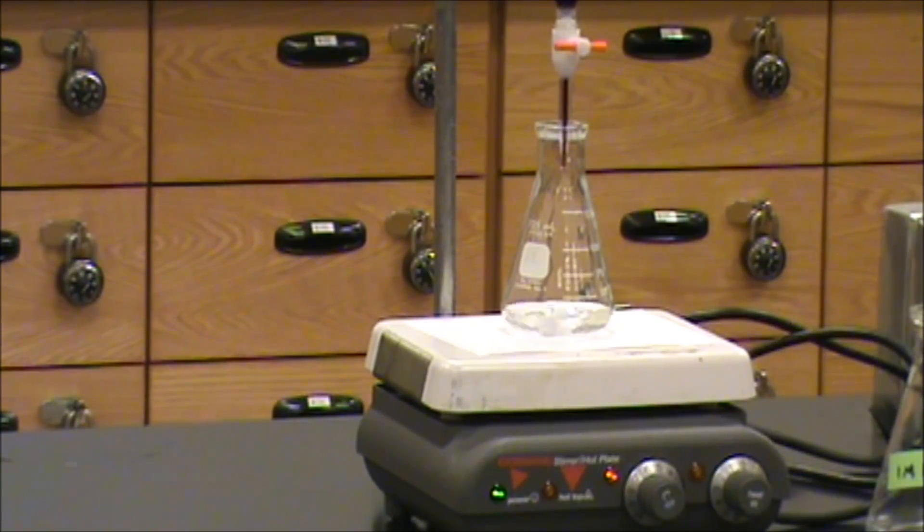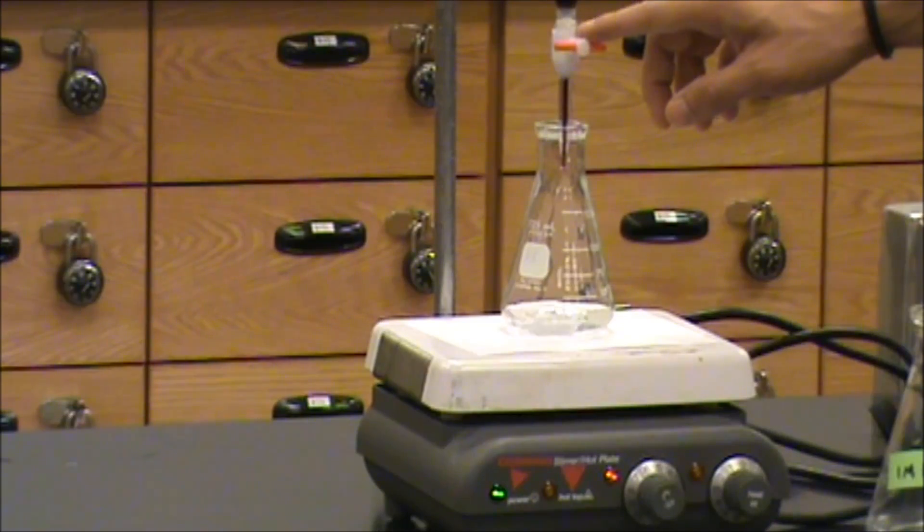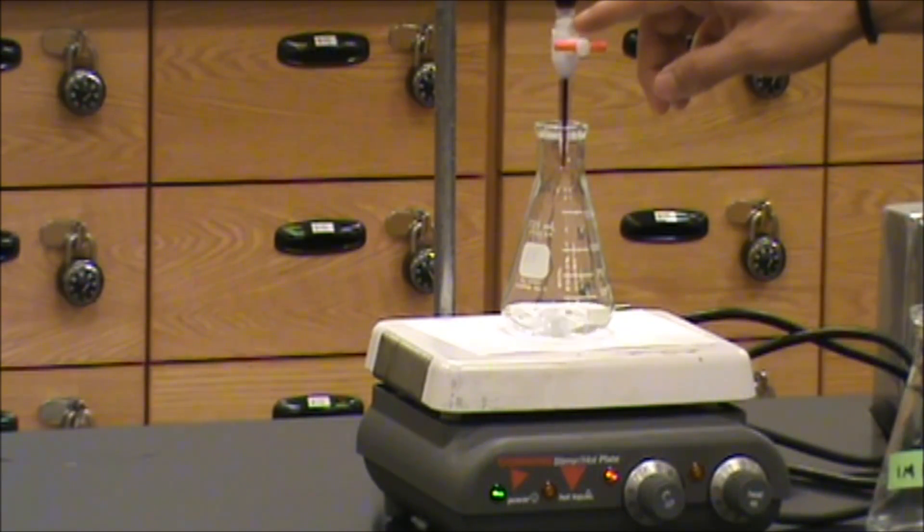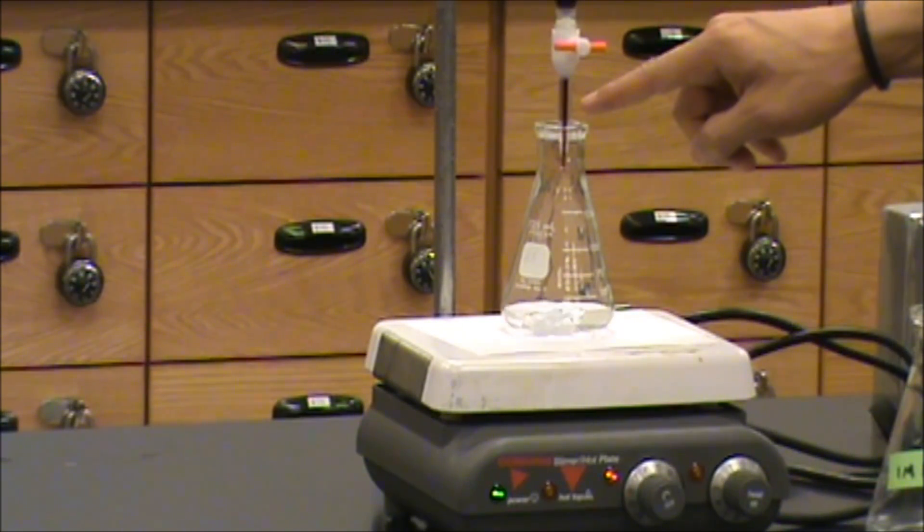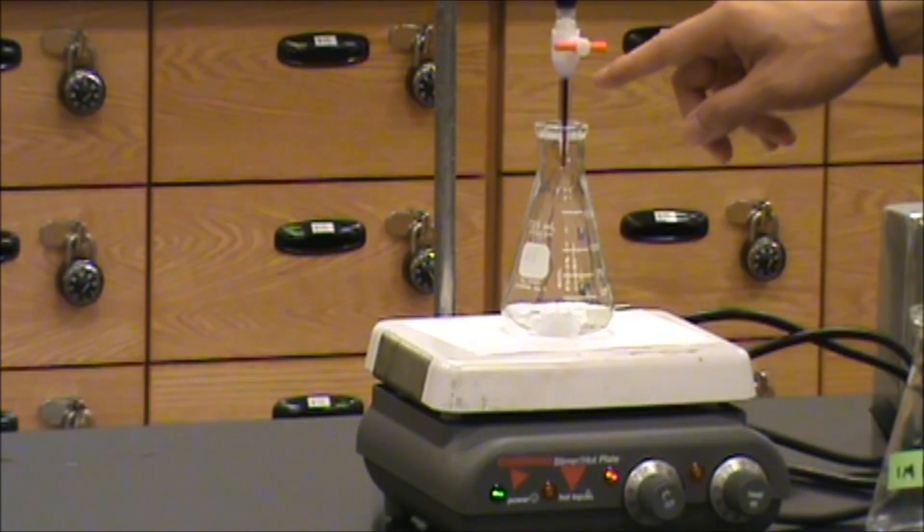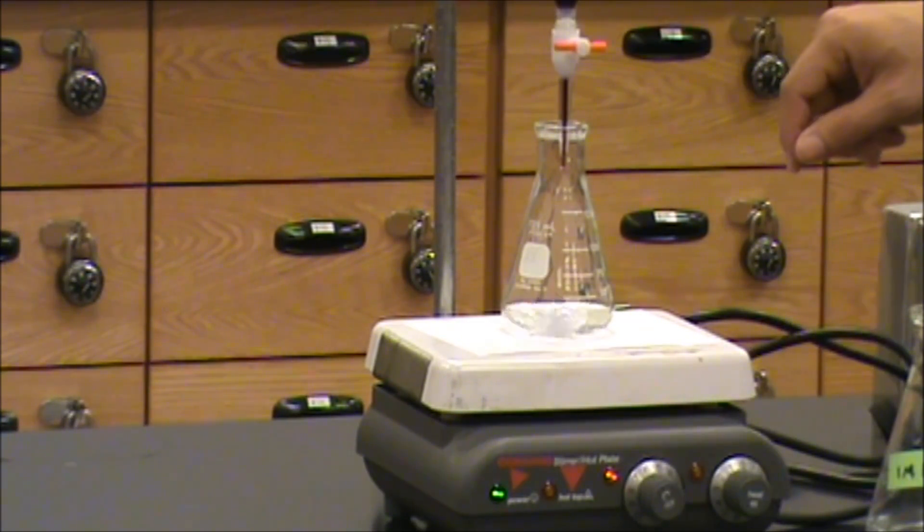It's important to note that a big difference between this redox titration and the acid-base titration is that there's no indicator necessary. The reason for that is that our titrant has an intense purple color. We'll be able to tell the progress of the reaction by observing this purple color.